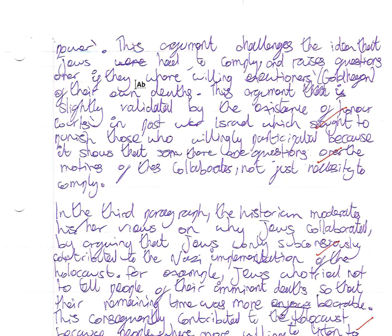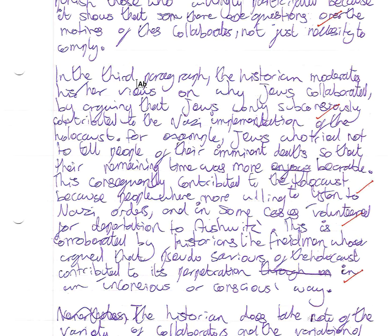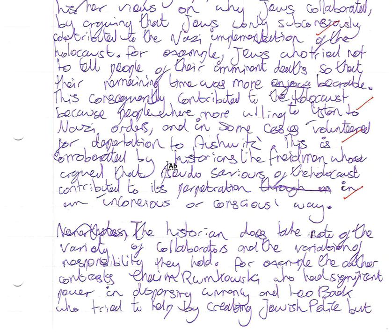Additionally, following in the third paragraph, the historian moderates his or her views, showing a really adept understanding of the approach of the historian and what they're trying to say — by saying that the Jews were subconsciously contributing to the Nazi implementation of the Holocaust. For example, the Jews who tried not to tell people of their imminent death so that their remaining time was more bearable consequently contributed to the Holocaust because the people were more willing to listen to Nazi orders. In some cases, they volunteered for the deportations to places like Auschwitz. It's not that the Jews wanted to destroy themselves — it's that they were doing it to make things more bearable. It's a sense of moderation.